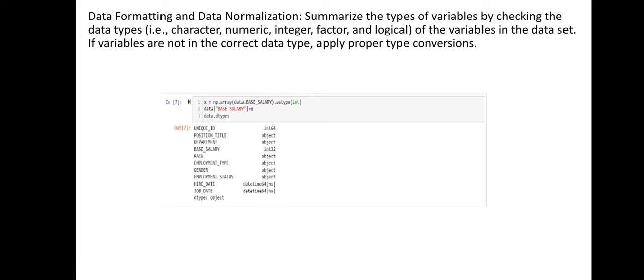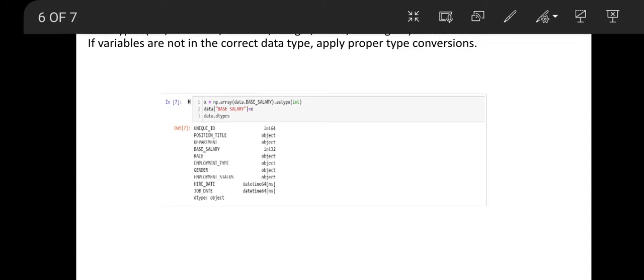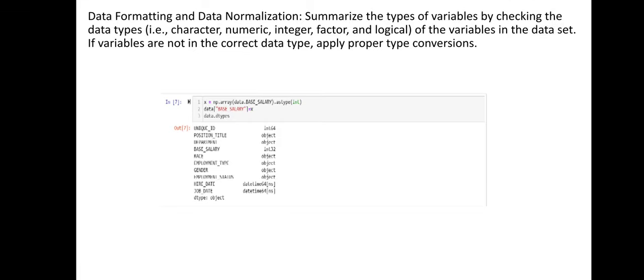Next is data formatting and data normalization. This involves checking the data types of variables in the dataset. If variables are not in the correct data type, we apply the proper type conversion. For example, the base salary column may initially be of a different type that needs to be converted.